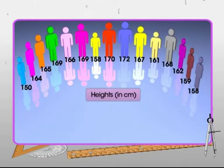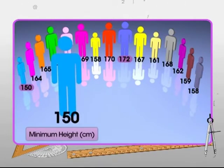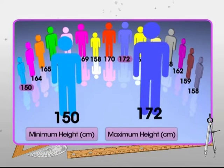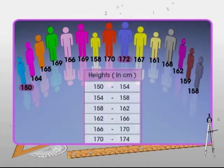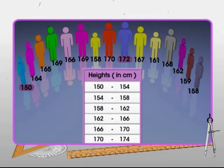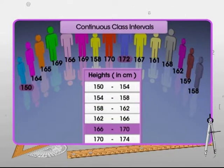For this, locate the minimum and maximum heights. They are 150 cm and 172 cm respectively. To include all the observations in the groups, you make the various groups with equal intervals. Such groupings are called continuous class intervals or classes.